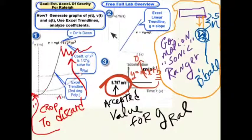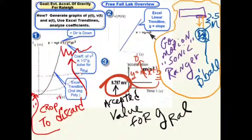The positive direction is down since you're dropping the ball. The second graph is the velocity-time graph, or v = v₀ + gt, since the positive direction is taken to be down. You will use Excel to generate a linear trend line, and the slope of that trend line should be the acceleration of gravity, or about 9.80 meters per second per second.